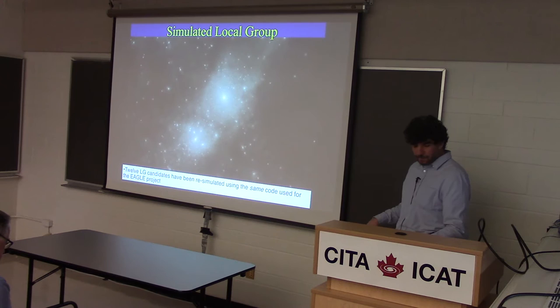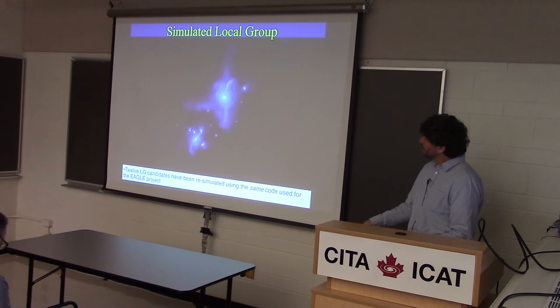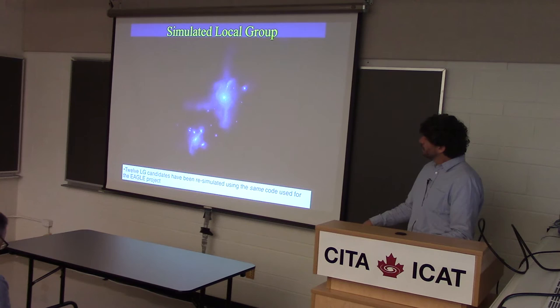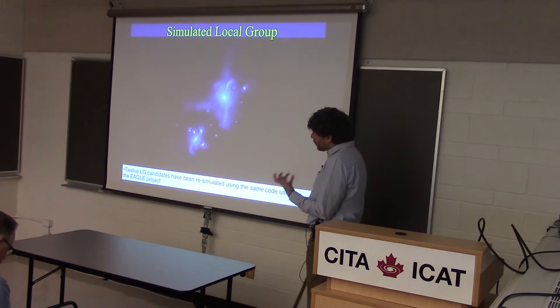This is what one of the local group simulations looks like — shown in dark matter, in gas, and in stars — just to show that the code naturally only places luminous galaxies in the most massive clumps.